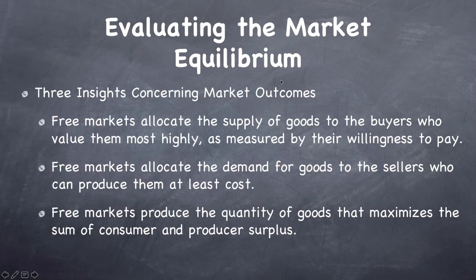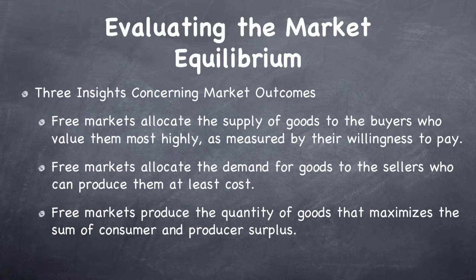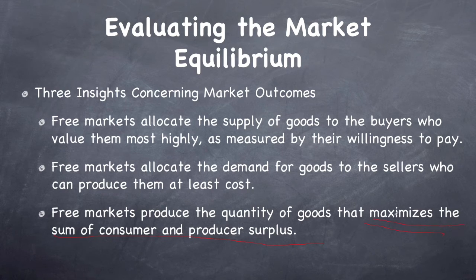There are three key insights about market outcomes. First, markets allocate goods to the buyers who value them most highly, because they have the highest willingness to pay. Second, free markets reward sellers who have the lowest cost, since they can make the most profit. Third — and most importantly — free markets generally tend to maximize total surplus, making the market the most efficient way of allocating goods and services most of the time.